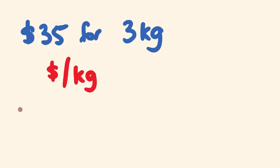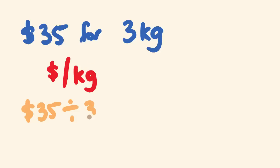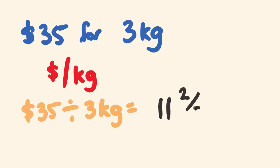The dollars per kilo. So how would I work this out? You yell out: just do it in that order. The number of dollars divided by the number of kilos. The number of dollars is $35, 'per' means divide — always means divide — the number of kilos is 3. So 35 divided by 3, the answer is 11. Eleven threes are 33 and there's 2 left over, so we're going to say 11 and 2 thirds of a dollar per kilogram.